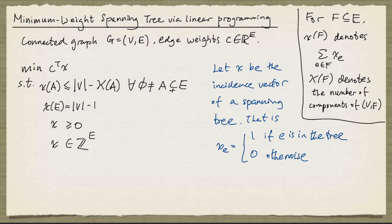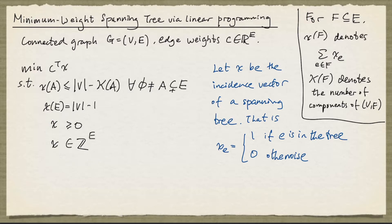X being 0-1 is non-negative everywhere and has integer components. Because the tree is a spanning tree, the number of edges is one less than the number of nodes, so this equality is satisfied by X.